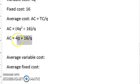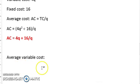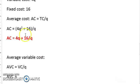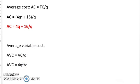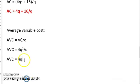Average variable cost equals variable cost divided by quantity. Our variable cost is 4Q squared, divided by Q. One of the Q's cancels out, so average variable cost equals 4Q. That's our answer.